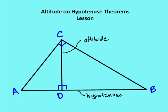Altitude on hypotenuse theorems — what do we mean by altitude on hypotenuse theorems? I've drawn a right triangle ACB, and what we've done is we've created or drawn an altitude CD to the hypotenuse AB. So I have CD as the altitude, AB as the hypotenuse. The theorems that we're going to talk about derive from the altitude being placed on the hypotenuse AB.